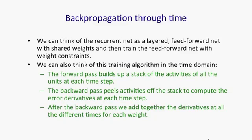After the backward pass, we can add together the derivatives at all the different time steps for each particular weight and then change all the copies of that weight by the same amount, which is proportional to the sum or average of all those derivatives.